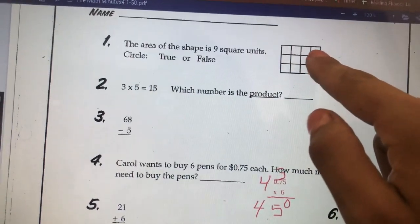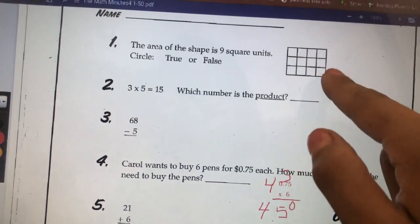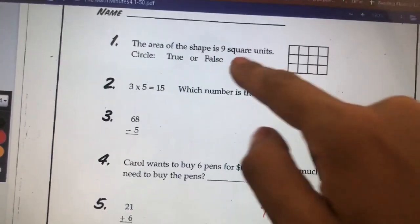We have 1, 2, 3, 4, 5, 6, 7, 8, 9, 10, 11, 12. This says 9, but we actually have 12, so that would be false.